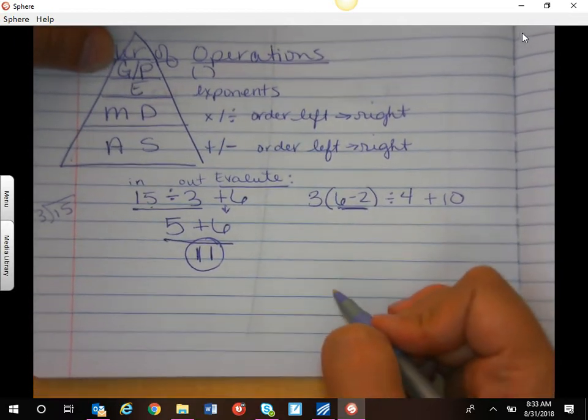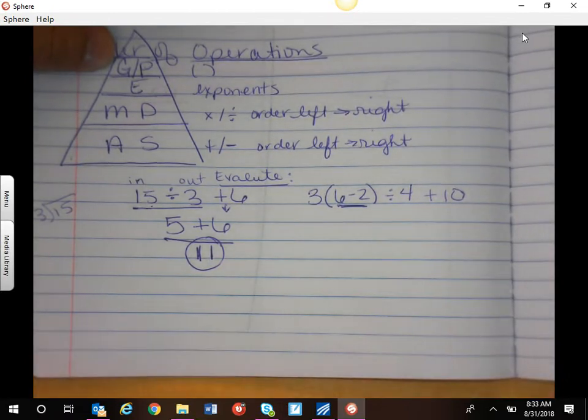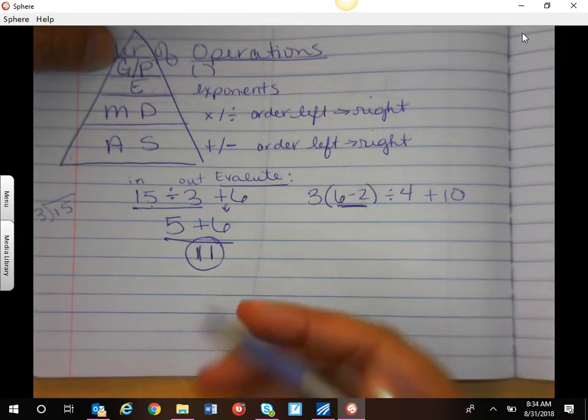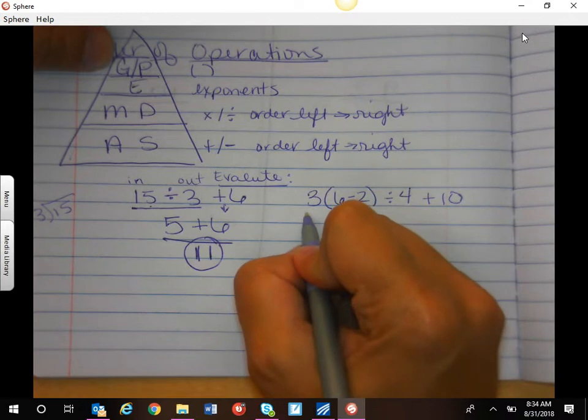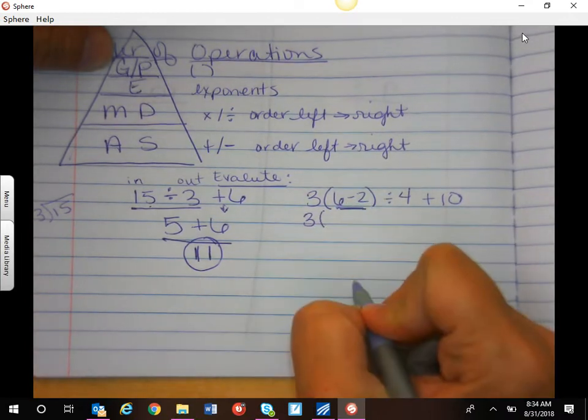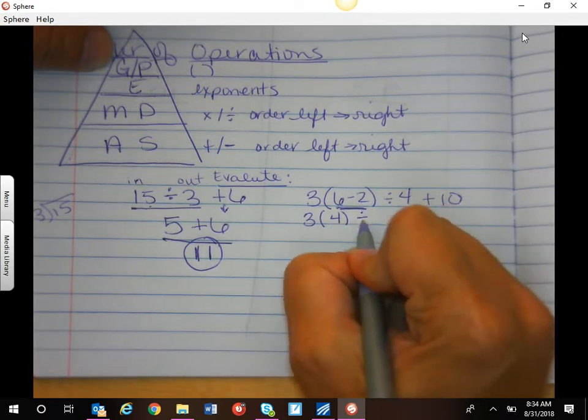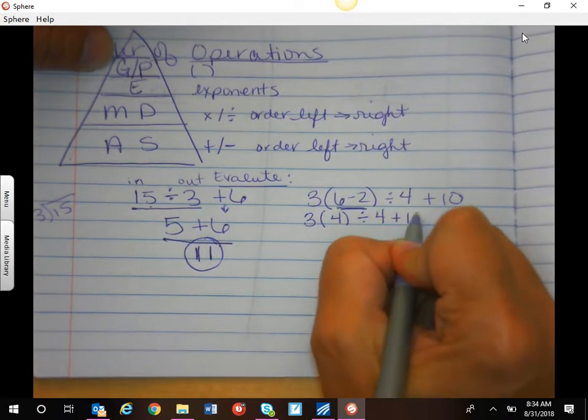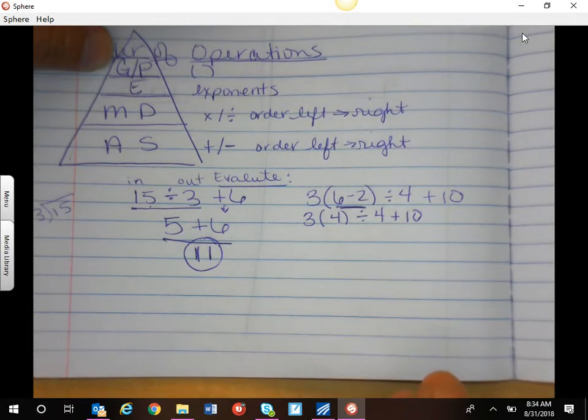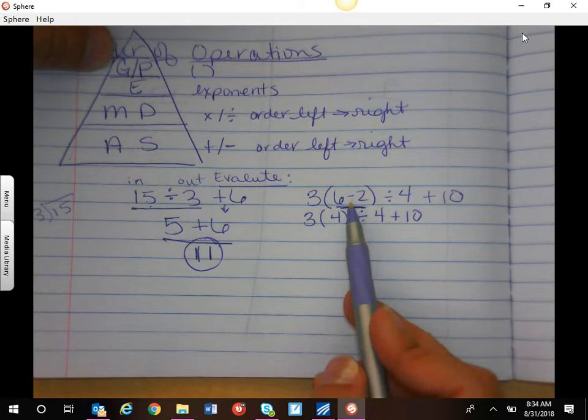And guys, when you have some longer ones like this, it's really important that you write out each step. So I haven't used this 3, so I'm going to go ahead and just rewrite it. I can do 6 minus 2, I get 4. And I'm going to rewrite everything else. If you try to do too many steps at once, it's going to get very confusing.